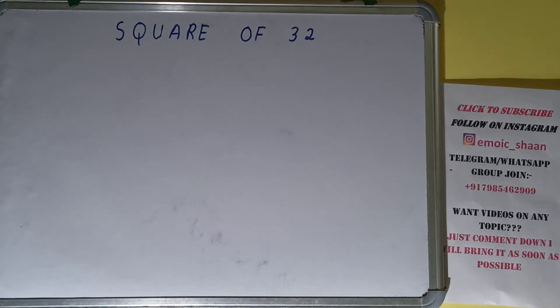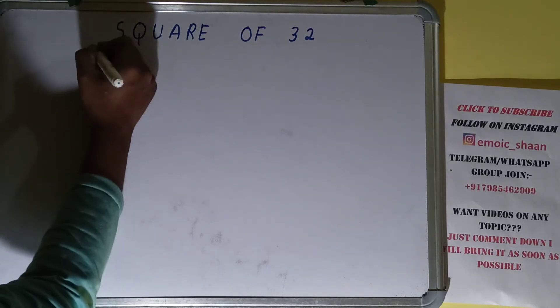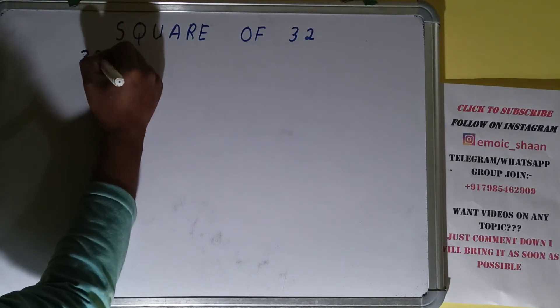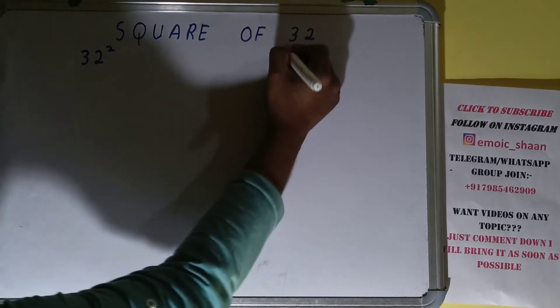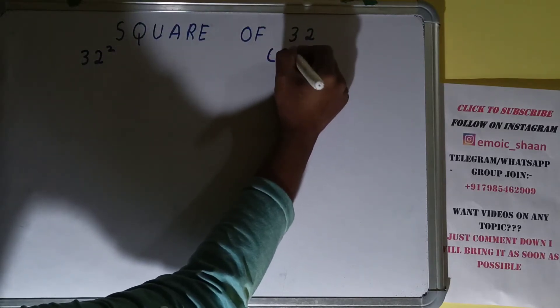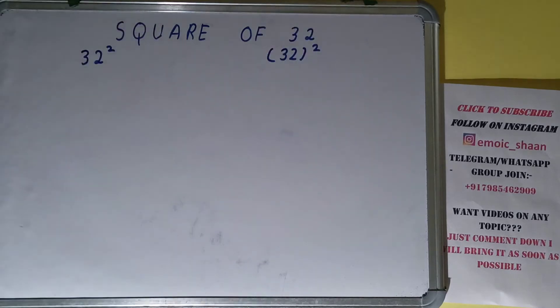Hello friends, and in this video I will be helping you with the square of the number 32. So let's start. Square of 32 can also be written as 32 raised to power 2, or inside bracket 32 outside 2. These all have one and the same meaning - that is, we need to find the square of 32.